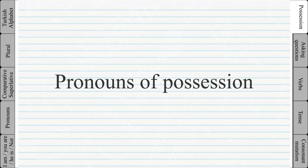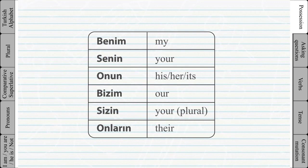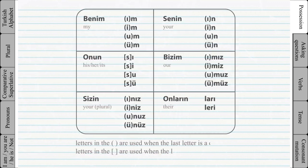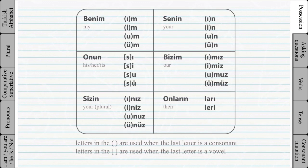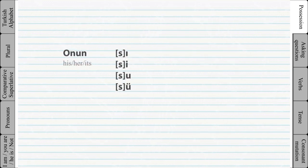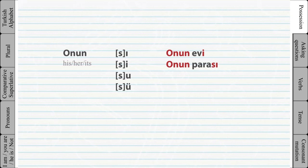Pronouns of possession. The pronouns of possession are also similar to subject pronouns — when we use them we should also add the correct ending. Look at the table to see the pronouns of possession and the possible endings. The letters in parentheses are used when the last letter is a consonant, and the letters in square brackets are used when the last letter is a vowel. For example, 'my car' — because the word 'araba' ends with a vowel, we only use the letter M. The letter S works as a buffer between two vowels.